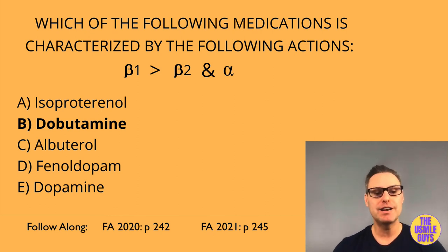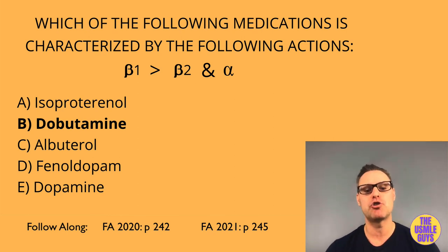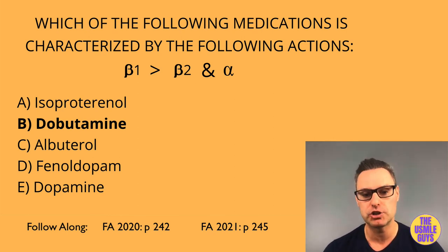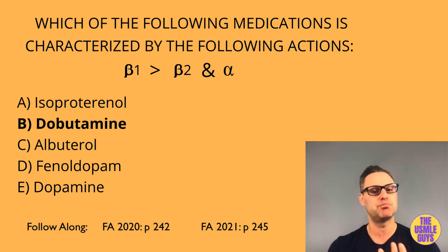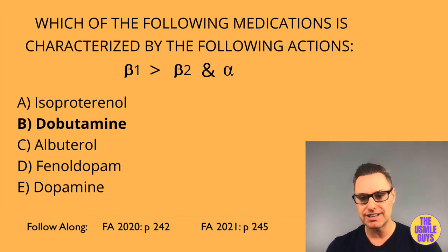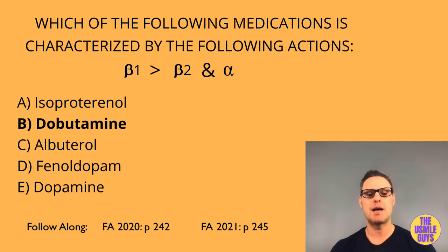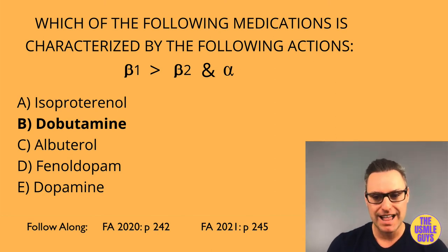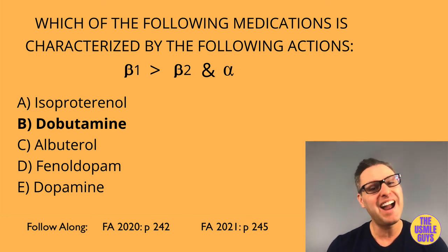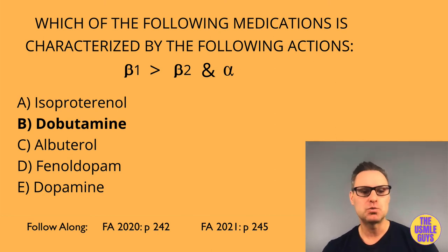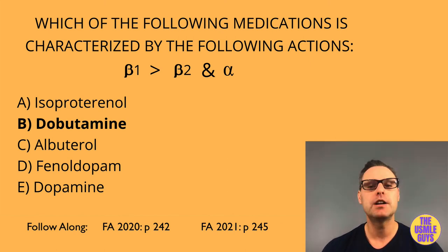Epinephrine has stronger beta stimulation than alpha stimulation. At normal doses it increases heart rate and cardiac output; at high doses it affects blood pressure. Epinephrine is used for anaphylaxis, asthma, and open-angle glaucoma.